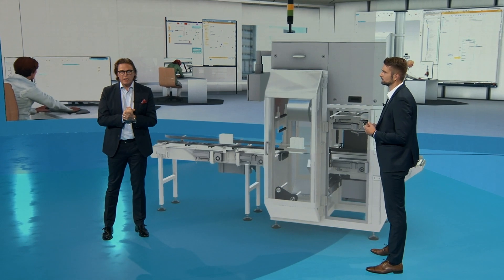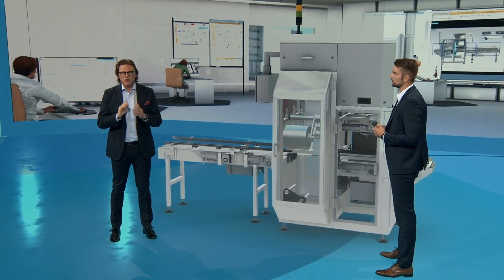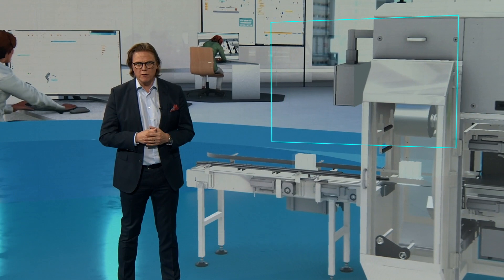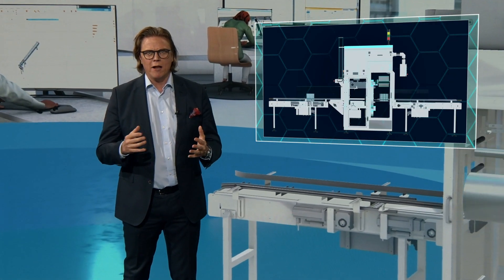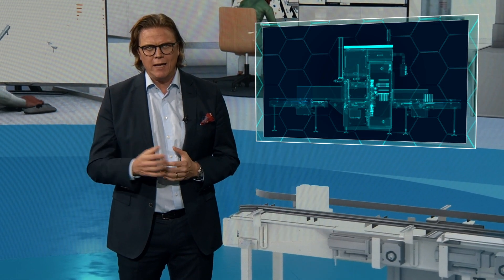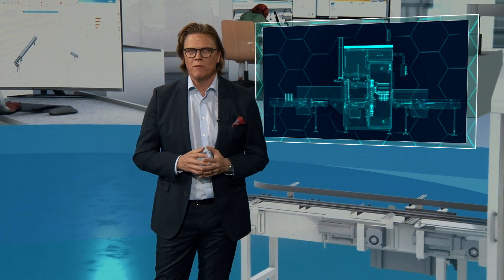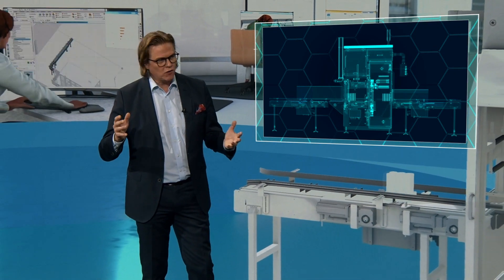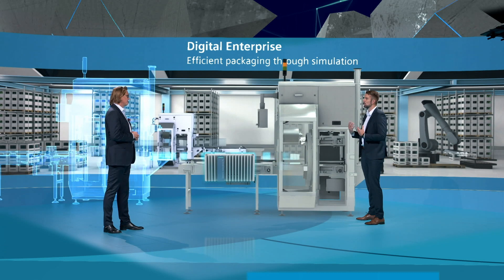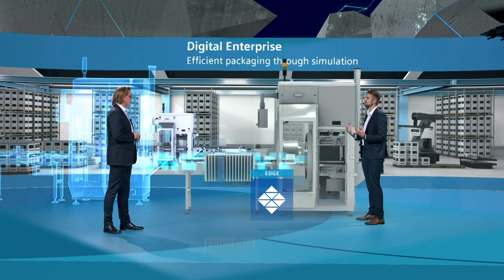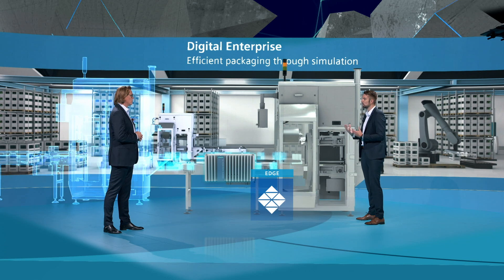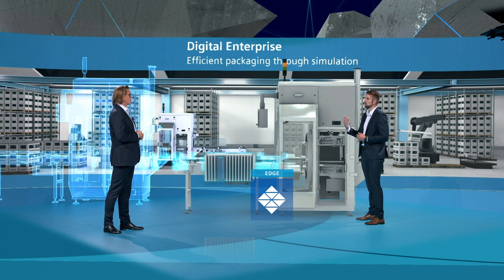When the machine is up and running, the benefit of using the digital twin continues. The machine produces a lot of data, which we capture in our digital twin of the performance. Industrial Edge allows you to optimize machine performance by collecting and analyzing the data right on the machine using specific applications. The Edge App Live Twin, running on an Edge device, brings the digital twin of the machine to life, feeding back actual data to continuously optimize the virtual model for best machine performance.